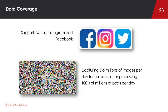So to summarize how we're applying this technology: logos, objects, faces and emotions, text in images, scenes — and going further as we learn from our users, with duplicates being one upcoming area. In terms of data coverage, right now we're applying it to images from Twitter, Instagram, and Facebook. We're capturing around five to six million images per day for our users — relevant to our users — after processing some hundreds of millions of posts per day. In future, we're looking to apply it to blogs and news images, since a news story might put a picture of a brand without mentioning it in text.